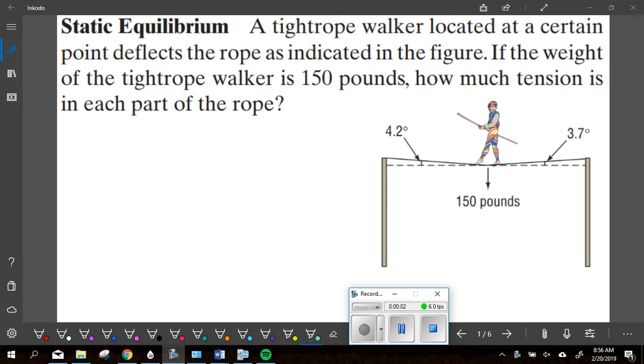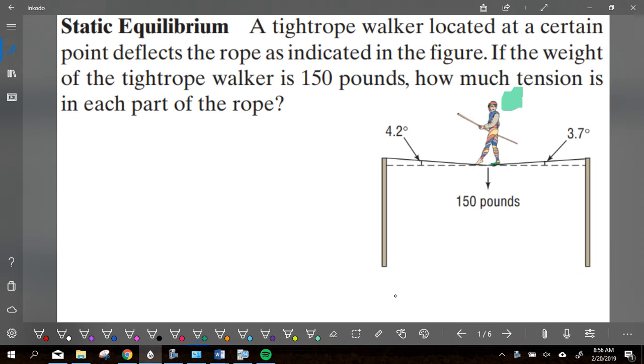So this is a static equilibrium problem. Again, this guy is not moving. We are trying to see the three forces that are working on them and trying to balance them out. There are three forces. You've got the tension of the rope here on the right side. So this rope right here. You've got this rope right here. And then what's the third force?